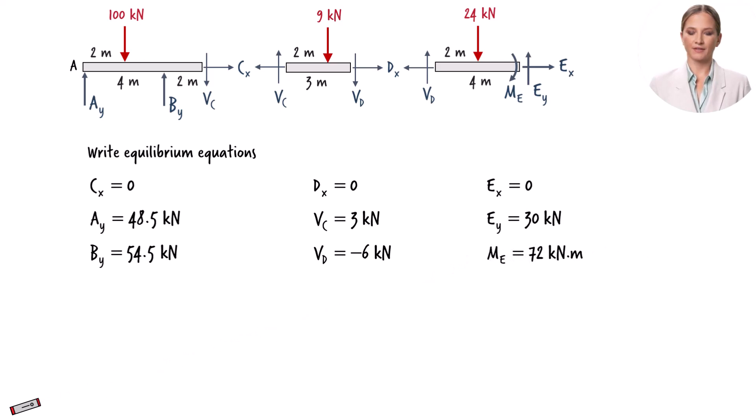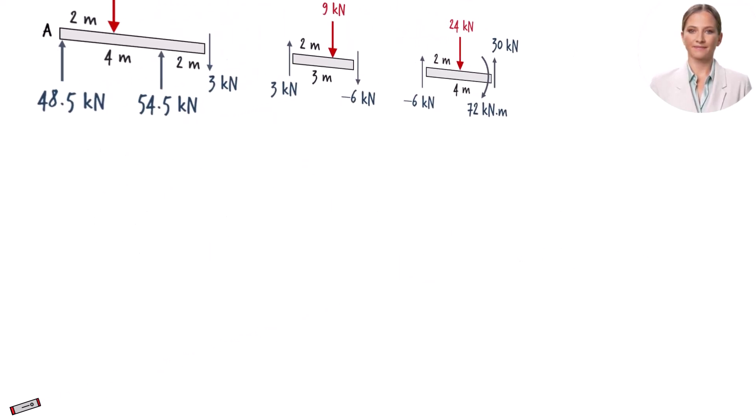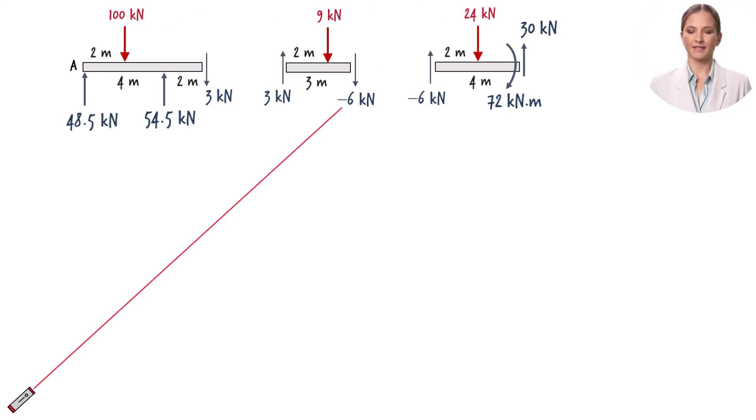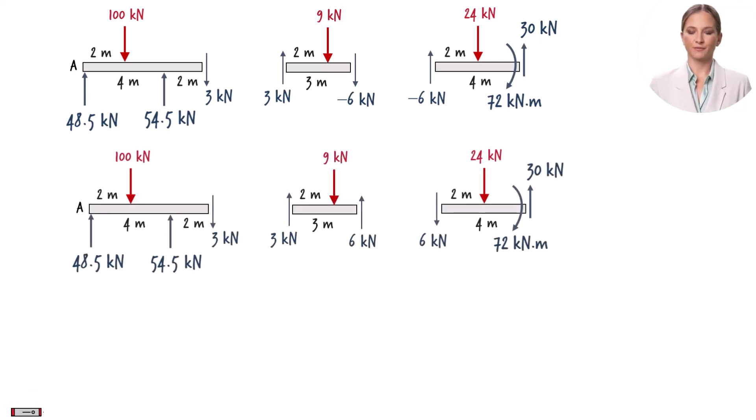Let's show the calculated forces on the free body diagram. Note the shear force with a negative magnitude. We can reverse the direction of the force and change the sign from negative to positive. To summarize, here are the beam's support reactions.